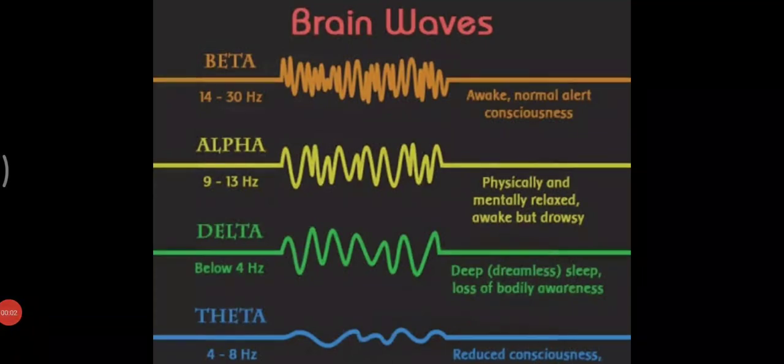Dear students, our next topic is brain waves. Brain waves are produced by synchronized electrical pulses from masses of neurons communicating with each other. These brain waves are detected using sensors placed on the scalp.